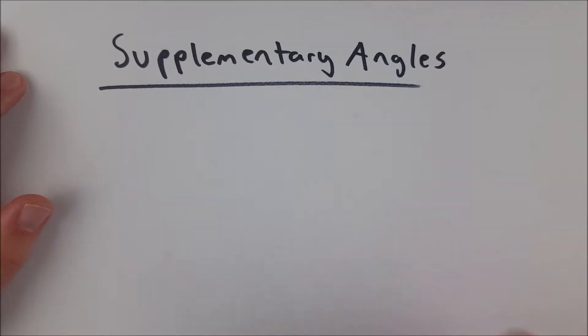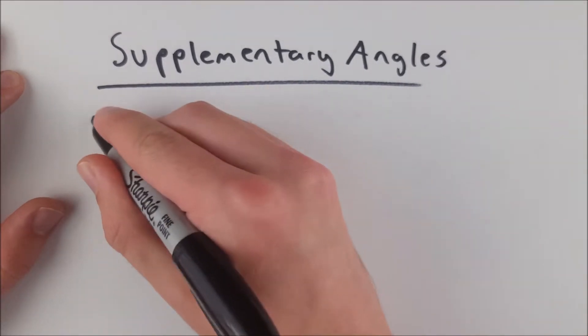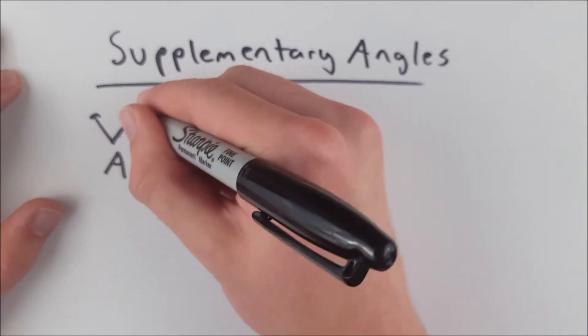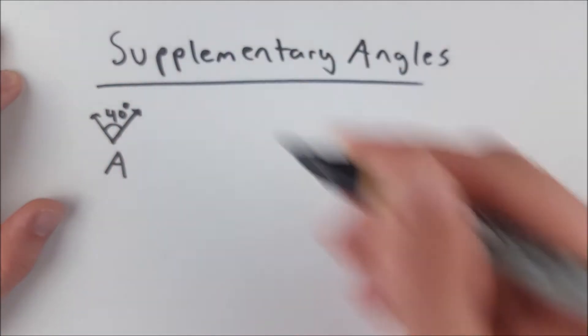Supplementary angles are angles which have an angle measure sum of 180 degrees. So, for example, if we had an angle here that had a measure of, let's say, 40 degrees, this angle has a measure of 40 degrees,